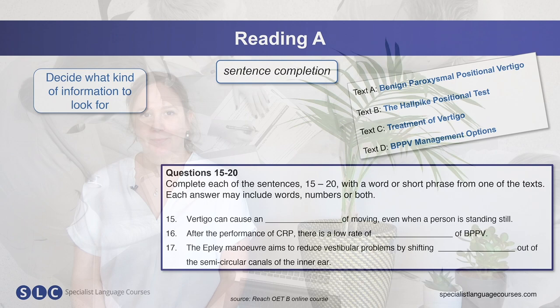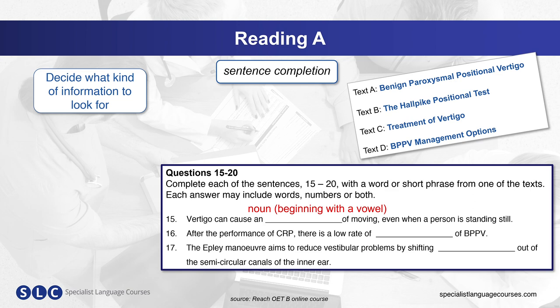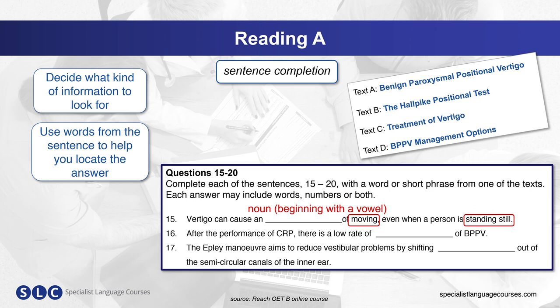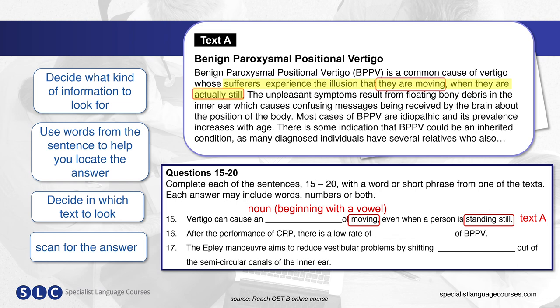Sentence completion is the other task type for Reading A. For this task, you need to decide what kind of information would complete the gap. For question fifteen, we are looking for a noun, and specifically one which begins with a vowel because you have the article AN before the gap. We can then use the words MOVING and STANDING STILL to help us locate the answer. For this question, the answer is most probably going to be in Text A. Scanning for the clues from the question, if we read that section, the answer is clearly 'illusion'. We can then move quickly onto the next question.